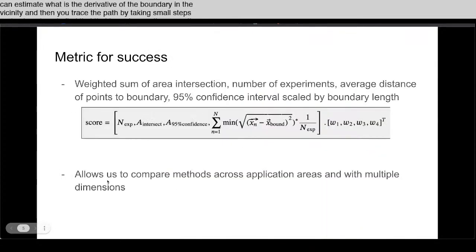A couple of metrics for success: one is how well do we find the right area, what is the number of experiments we want to minimize that, what is the average distance of points to the boundary. We don't want points far from the boundary because they don't contribute very much information, and how confident are we in the boundary.